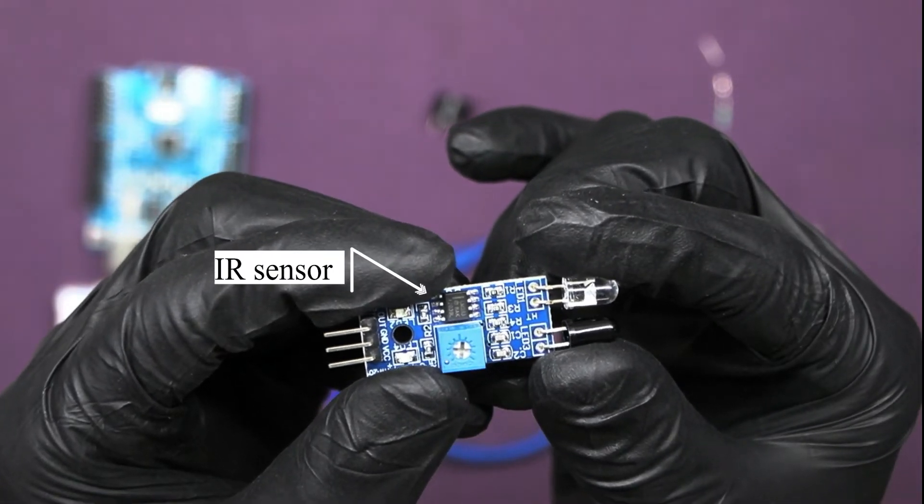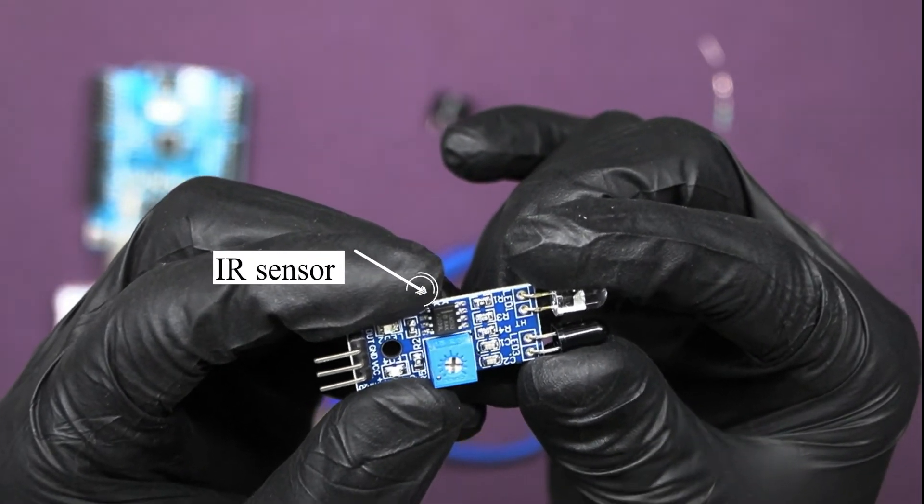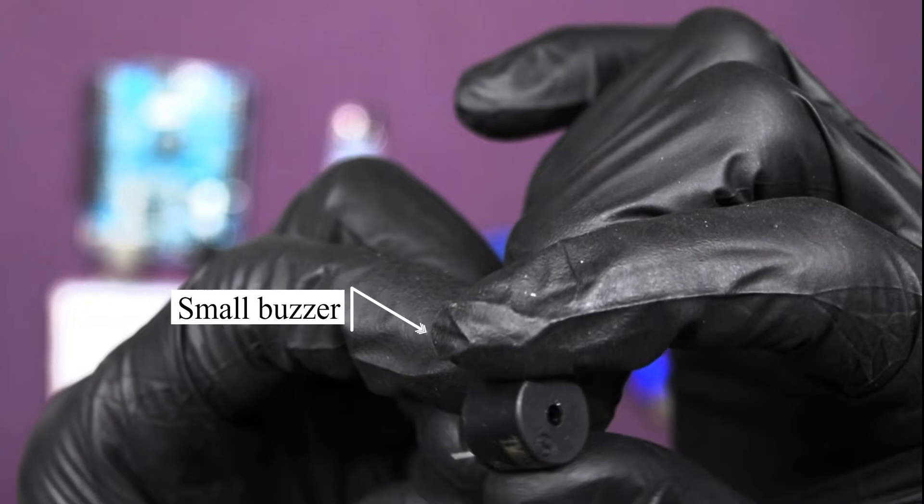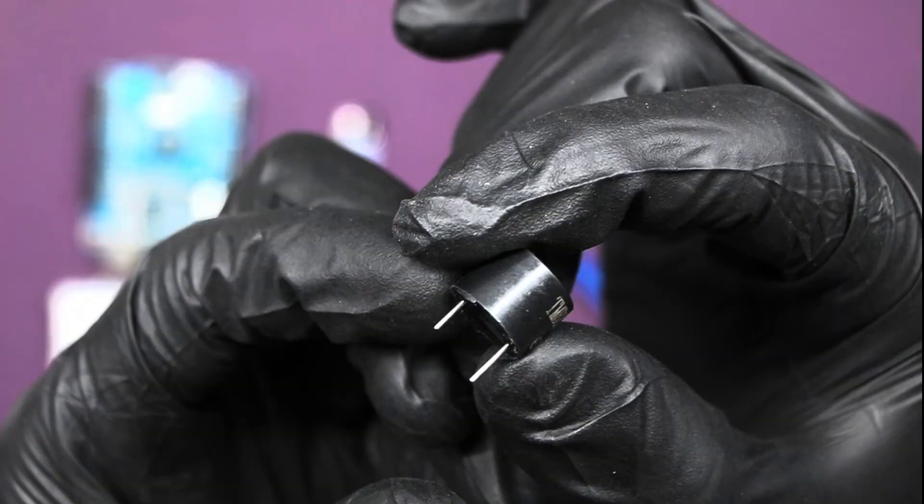If you want to know more about the IR sensor, just click on the I button and go through our previous video. Next, we need one 5-volt small buzzer where this larger pin is positive and smaller is negative.